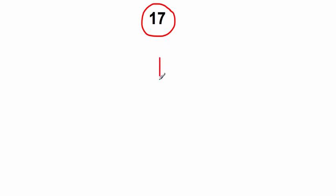Sometimes you'll be asked to find the prime factorization of numbers that are already prime. Their prime factorization is just the number itself. So 17 is already a prime number, and we simply write 17 for the prime factorization.